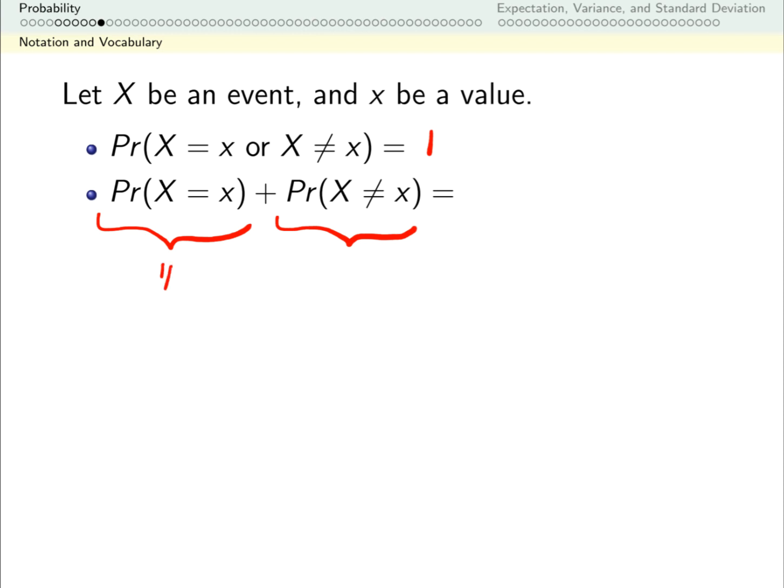This second line is very similar to the first. The probability that x happens plus the probability it doesn't happen. Well, if x happens half the time, that means it doesn't happen the other half. If x happens a third of the time, that means the remainder of the time, two thirds, it doesn't happen. In general, because exactly one of these happens, when I add these probabilities together, this is just describing all possibilities. So again, this is 1.